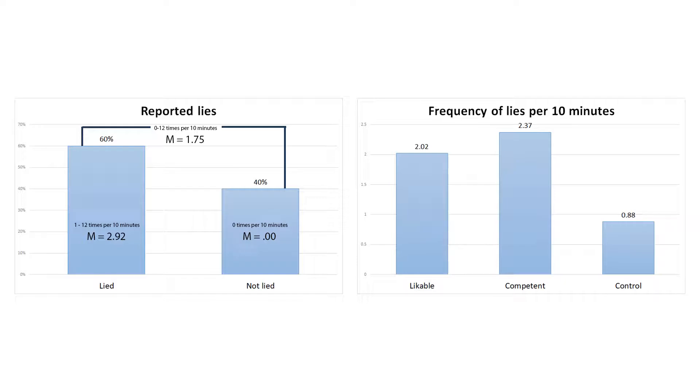Participants lied significantly more in experimental conditions compared to the control condition. And here the question comes. Where 3 times per 10 minutes come from? As I told you, it is most probably the wrong interpretation of the results.